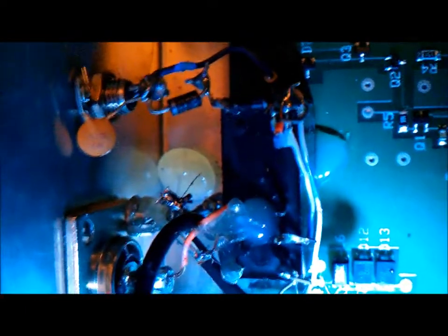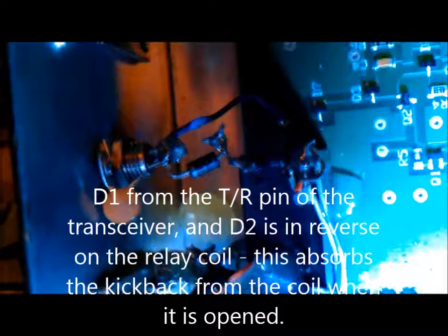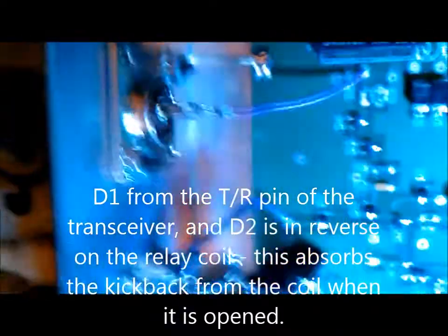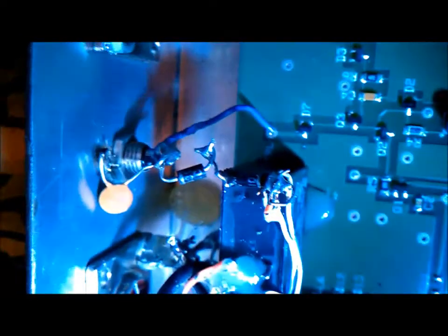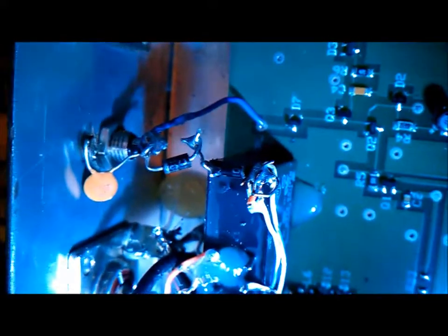So you see the TR relay there, I have another protection diode across the relay right here with the cathode on the other side. That's just for the snapback from the coil, just to absorb that quenching diode.